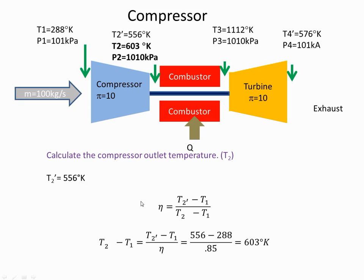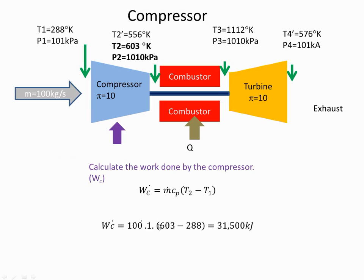The isentropic efficiency of a compressor is given by this formula that was derived in a previous video. When I plug the values in — 556 here, where 556 is the ideal temperature minus T1 which is 288 — I get 603 degrees Kelvin for T2. Using that 603 degrees Kelvin to work out the work done on the compressor, that works out to be 31,500 kilojoules.